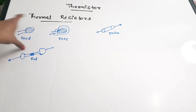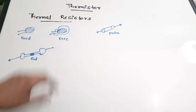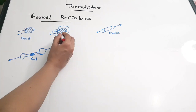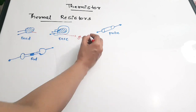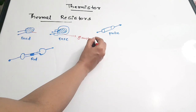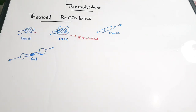There is a bead structure, which is the smallest one, and a disc structure. The bead has a glass coating, and the disc is also glass-coated. There is also a probe structure and a rod structure. Next we are going to see the relations between voltage, current, and time — the various characteristics of thermistors.